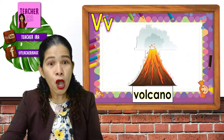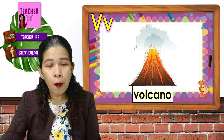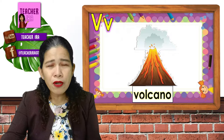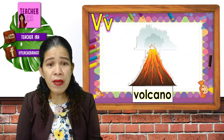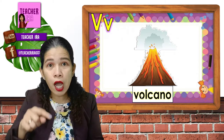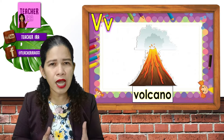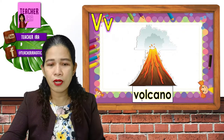Next, V, volcano. V, volcano. It's a landform that has a crater at the top and it erupts in time. V, volcano.